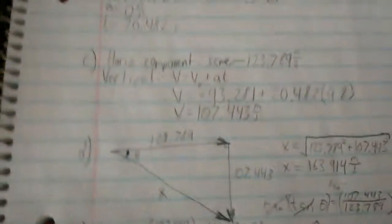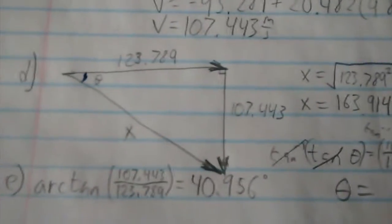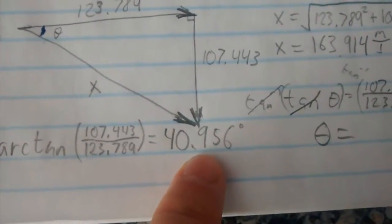We draw a triangle and we use trigonometry, our favorite type of math. So we can use the same triangle that we used for finding the angle here, 40.956 degrees.